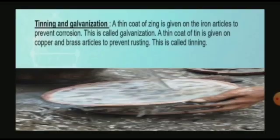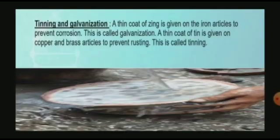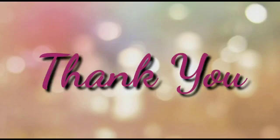Cleaning and galvanization: a thin coat of zinc is given on iron articles to prevent corrosion — this is called galvanization. A thin coat of tin is given on copper and brass articles to prevent rusting — this is called tinning. In this age of technology, a new process called powder coating has been developed, where coats of various colors are applied on metals like iron and aluminum to prevent corrosion. We have now completed our lesson number 13: Changes Physical and Chemical. Thank you.